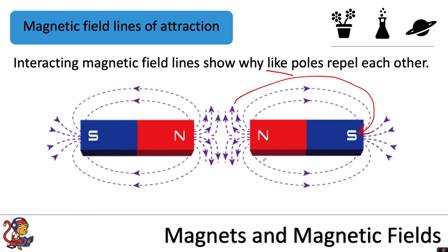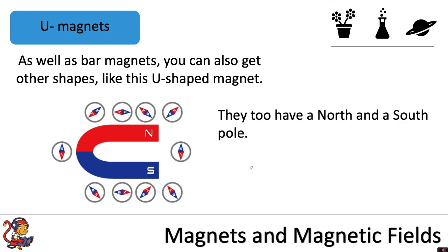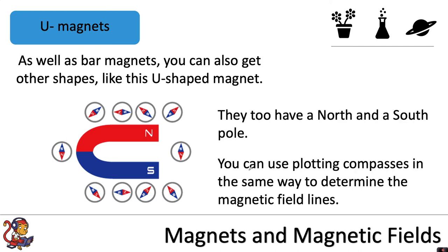As well as bar magnets, you can get other shapes like a U-shaped magnet. They too have a north and a south pole. You can use plotting compasses in the same way to determine the magnetic field lines — extending them you'd see the field lines going from north to south around the magnet, always pointing in towards the south pole.